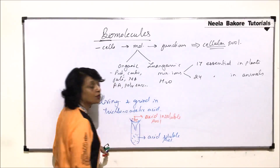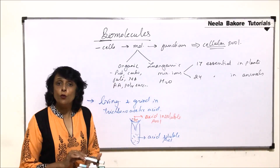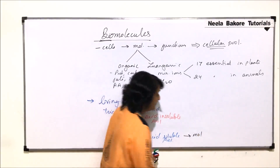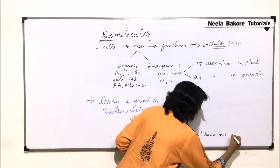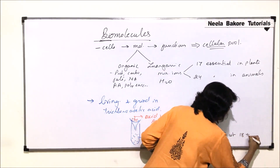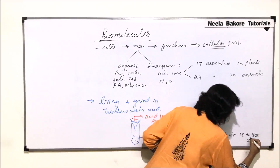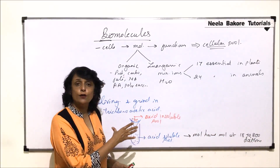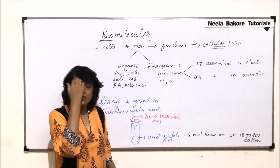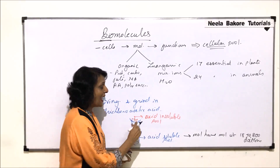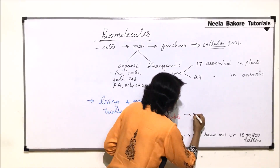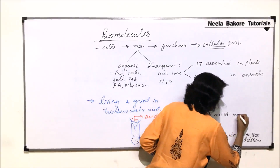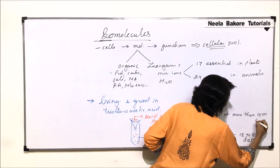There are two fractions: in the acid-soluble pool, the molecules have a molecular weight of about 18 to 800 daltons. In the acid-insoluble pool, the molecules have a molecular weight of more than 10,000 daltons.